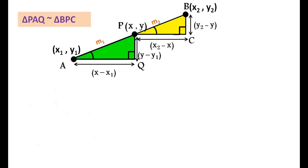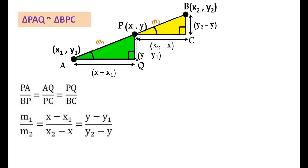We can write the corresponding sides as ratios: PA/BP = AQ/BC = PQ/BC. Here we will substitute the value of each side. M₁/M₂ = (x-x₁)/(x₂-x) = (y-y₁)/(y₂-y).